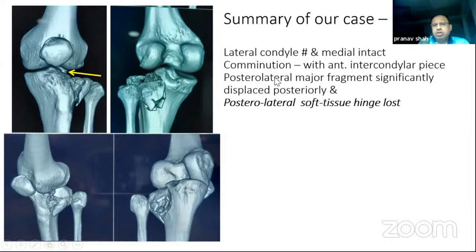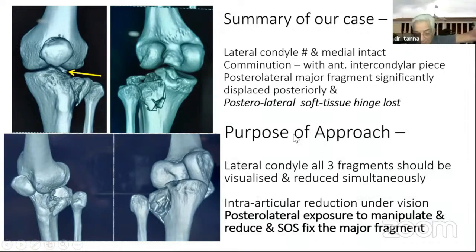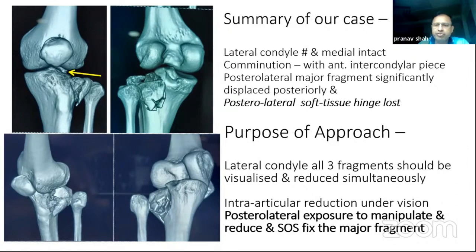To summarize the case: it is a lateral condyle fracture. The medial condyle is intact, and the MCL is clinically intact. We have at least three pieces — an anterior intercondylar piece, a lateral condylar wafer-thin piece, and a large posterolateral piece. The purpose of our approach is to visualize all three fragments and reduce them simultaneously in relation to each other.